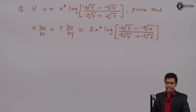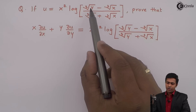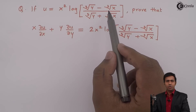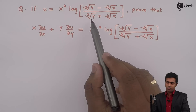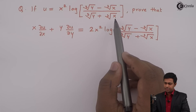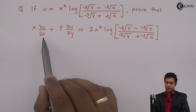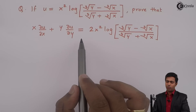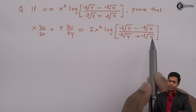Hello everyone. In this problem, u is given as x squared times log of (cube root of y minus cube root of x) divided by (cube root of y plus cube root of x), and we have to prove that x ∂u/∂x + y ∂u/∂y is equal to two times the given function.